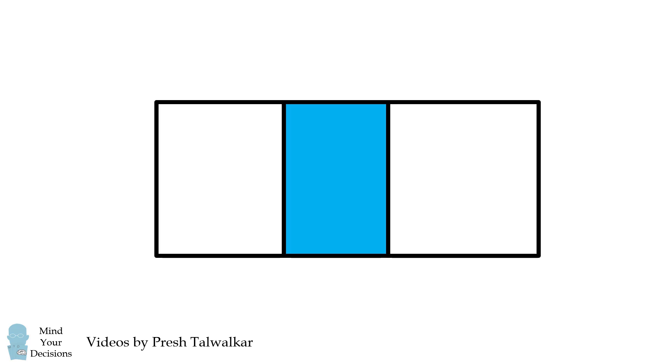Mind Your Decisions, I'm Presh Talwalker. There are three rectangles placed in a row. The width of the first and second rectangles together is equal to 7 meters. The width of the second and third rectangles together is equal to 8 meters. If the first rectangle has an area equal to 20 square meters, and the third rectangle has an area equal to 25 square meters, what is the area of the second rectangle?